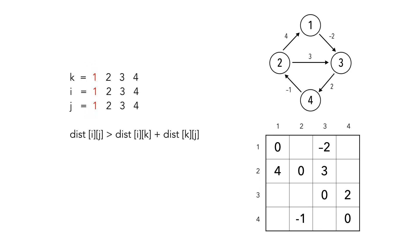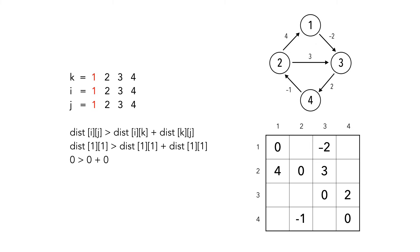We start with them all equaling 1. Let's fill in the corresponding values from our table. As you can see, the if condition isn't met, so we don't update our table.